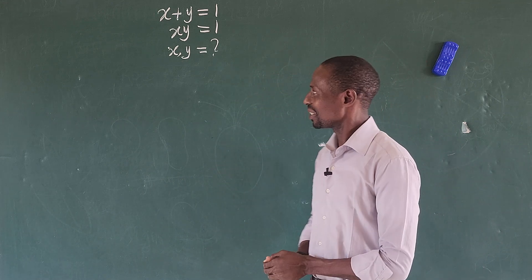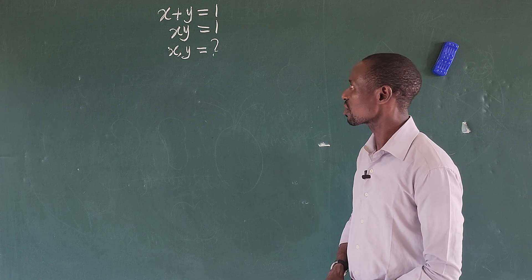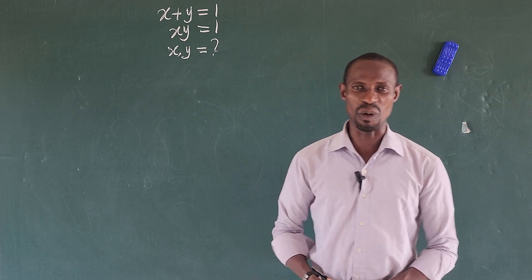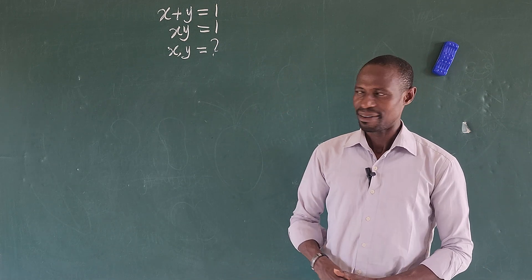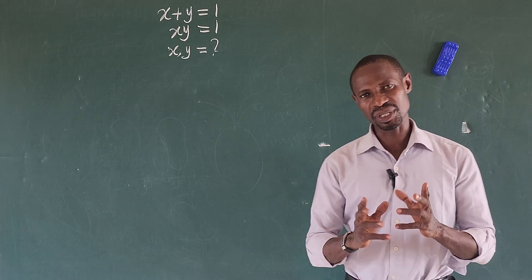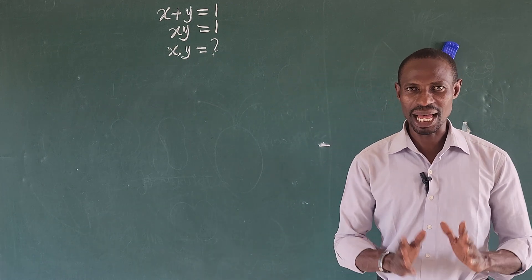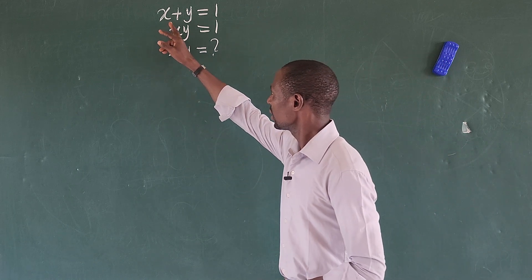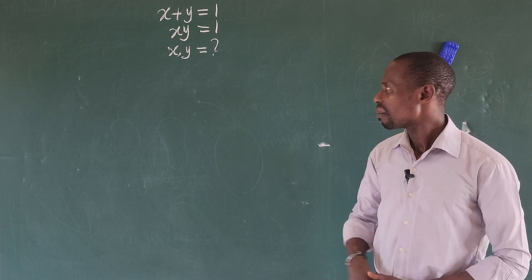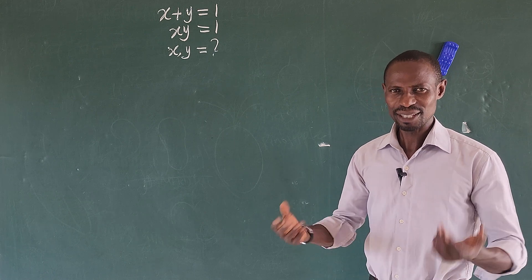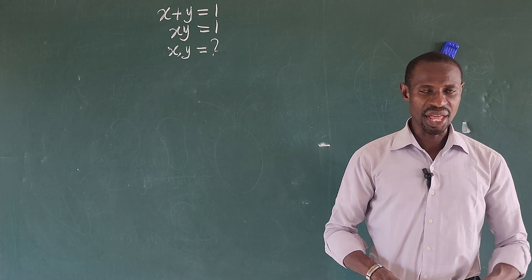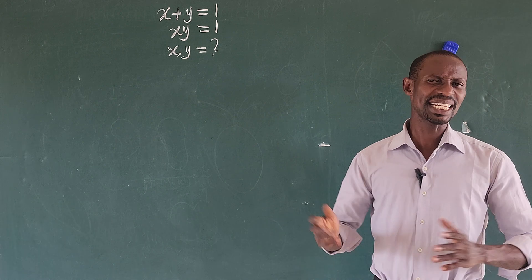Hello everyone, welcome to today's math class. Today we look at this question: we have x plus y equal to 1 and xy equal to 1. What are the values of x and y given these two equations? When I saw these equations, I thought about what the two possible numbers could be — are they going to be real numbers or will they fall into the class of imaginary numbers? If we put in half plus half that gives us 1, but half times half will not give us 1. So finding two numbers whose product is 1 and whose sum is 1 is the essence of this video.